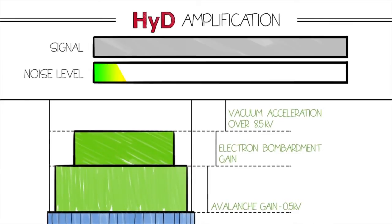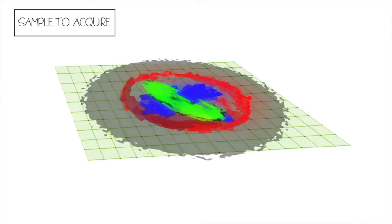The resulting detectors are more durable than traditional GaAsP PMTs, have less noise and higher sensitivity. An added benefit of the Hi-D is that it is capable of photon counting for quantitative imaging.